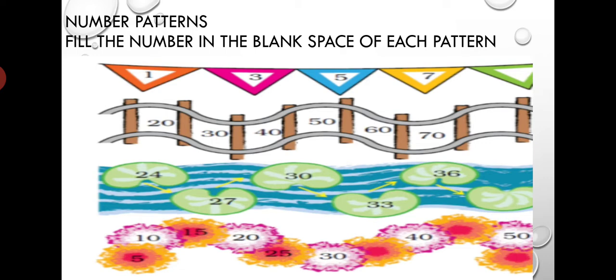Next: twenty, thirty, forty, fifty, sixty, seventy. There is a difference of ten numbers, so after seventy, seventy plus ten will be eighty. So the next number will be eighty. Good.